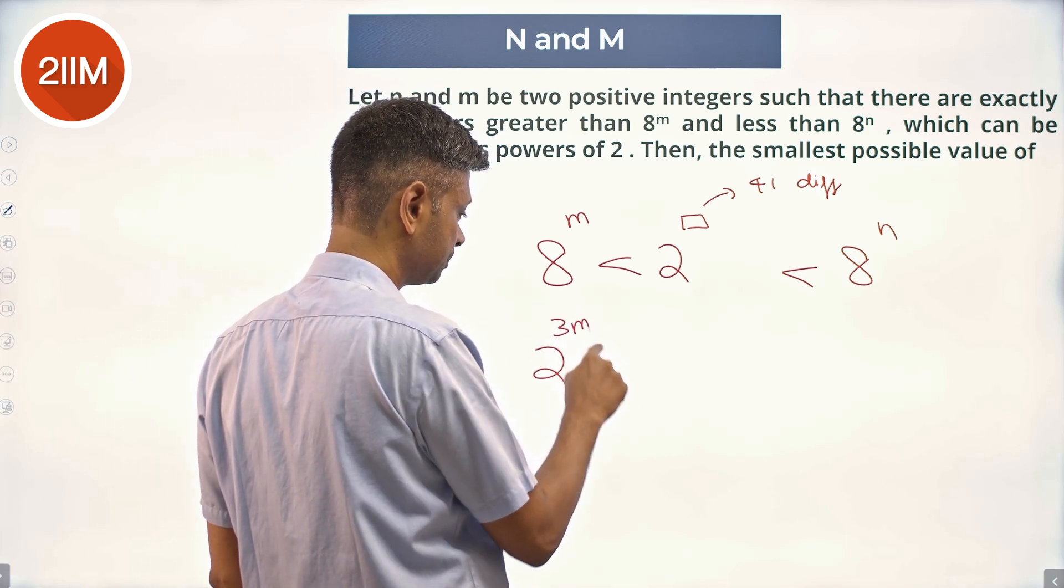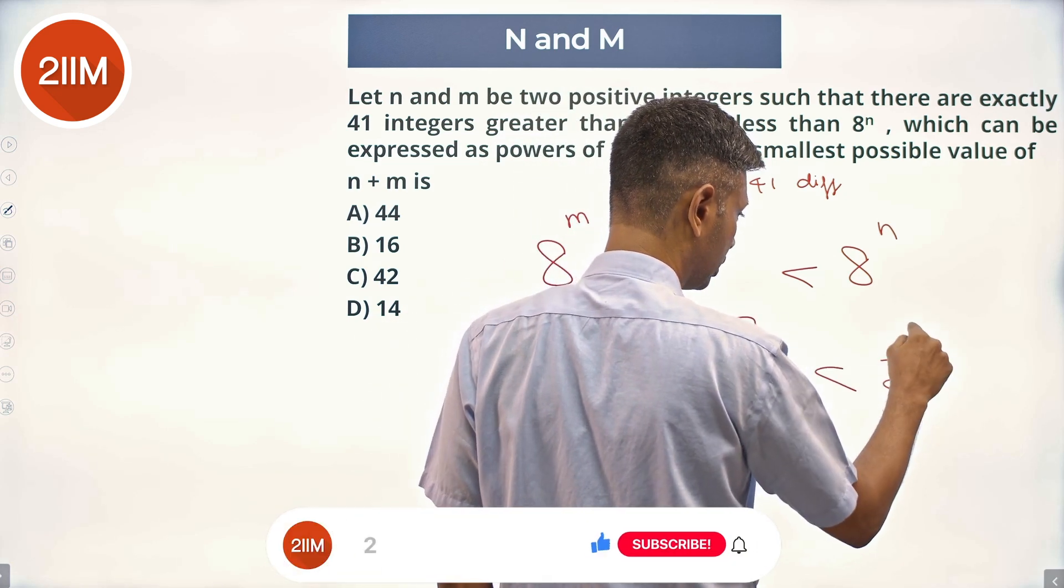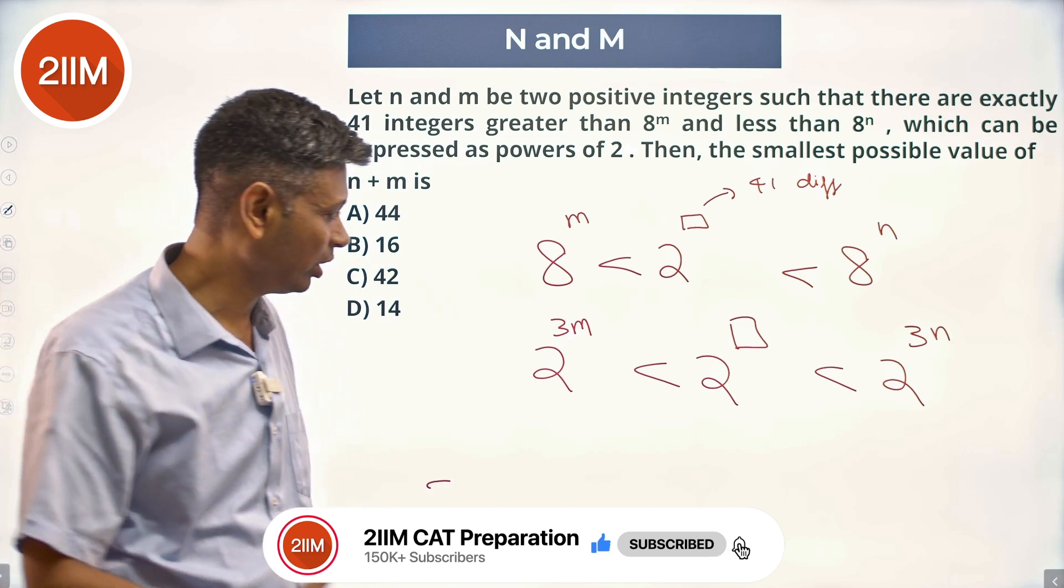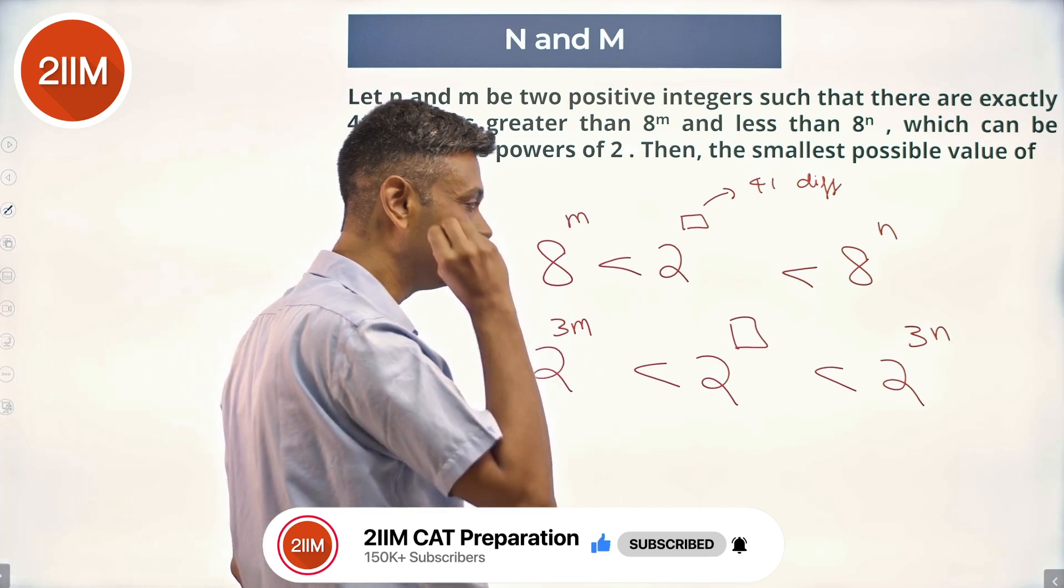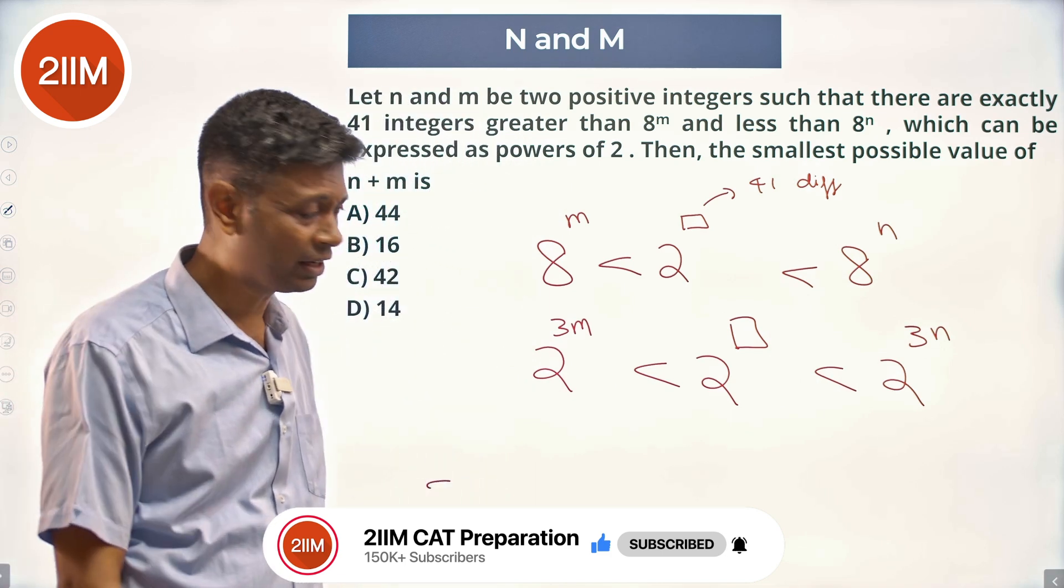this is 2 power 3m, less than 2 power something, less than 2 power 3n. So between 3m and 3n, between say 9 and 36, some two values. So 3m and 3n,